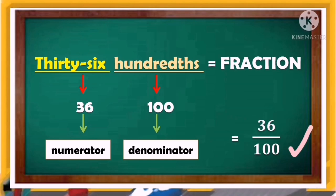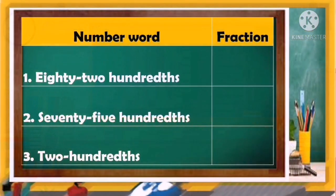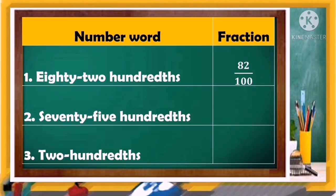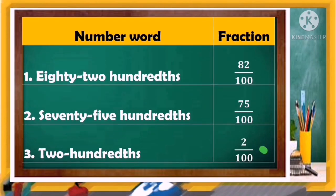Now let's answer: complete the table by writing the number word in fraction and decimal form. Number one — 82 hundredths — its fraction form is 82 over 100. Number two — 75 hundredths — its fraction form is 75 over 100. Lastly — two hundredths — its fraction form is 2 over 100. Very good, class!